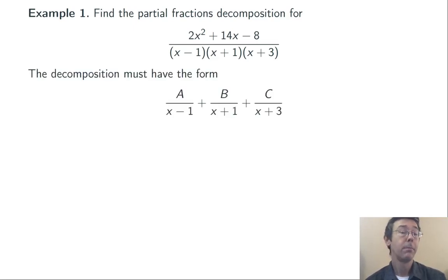So the form of the partial fractions decomposition is going to be this: constant over (x - 1) plus another constant over (x + 1) plus another constant over (x + 3). So one term for each one of those linear factors in the denominator.